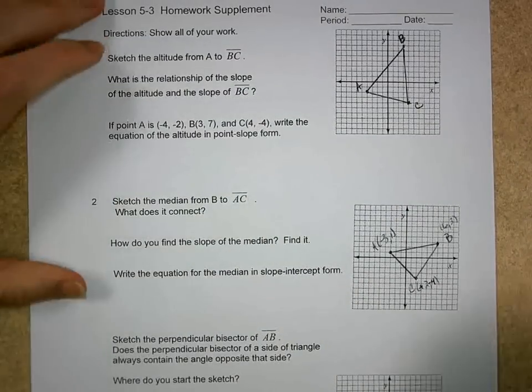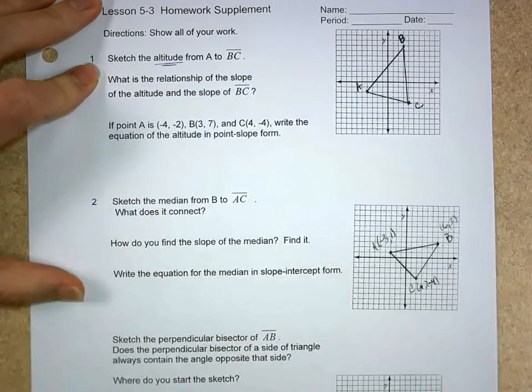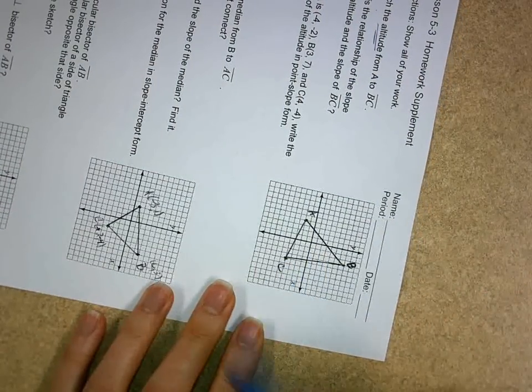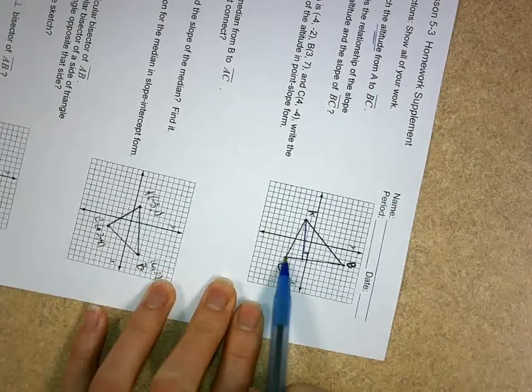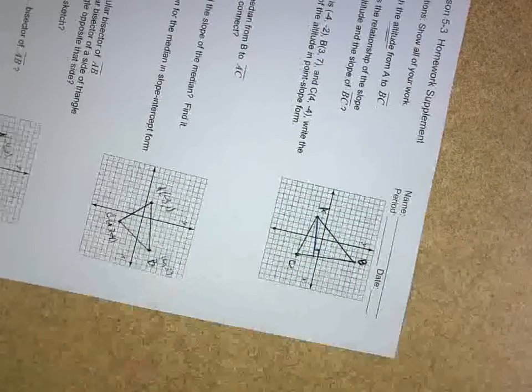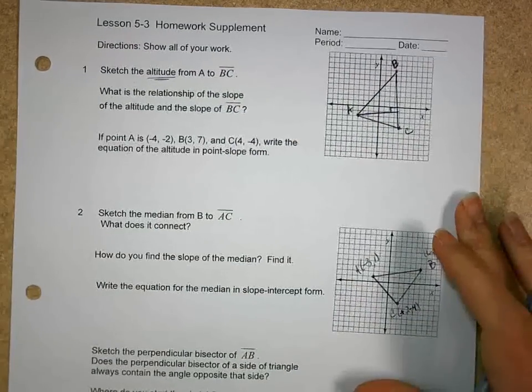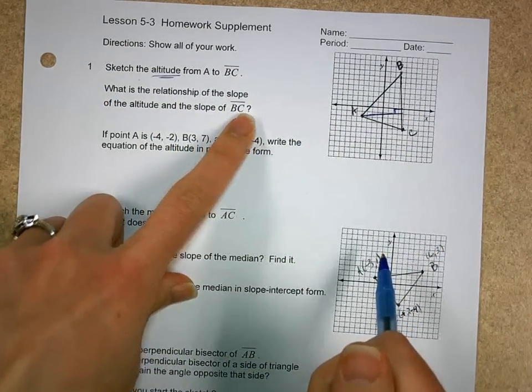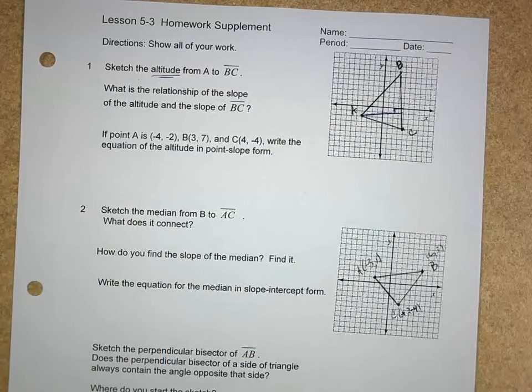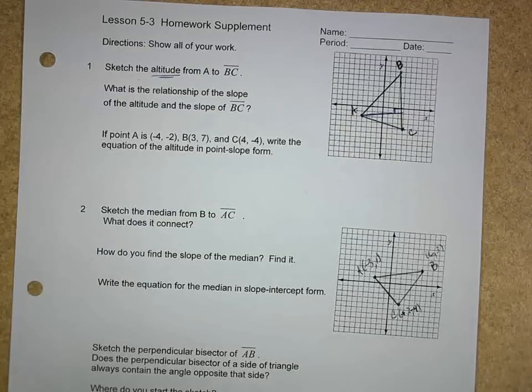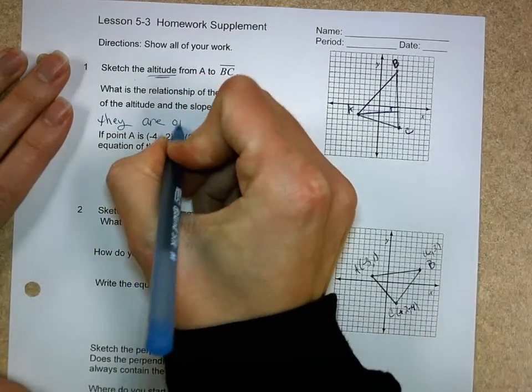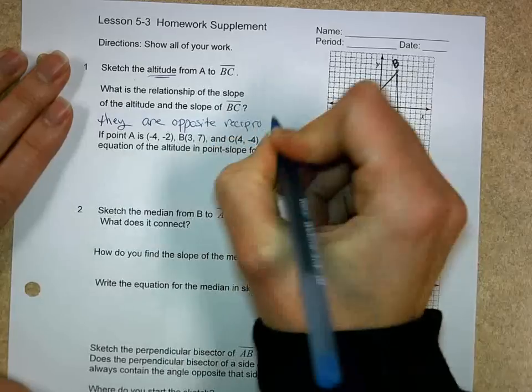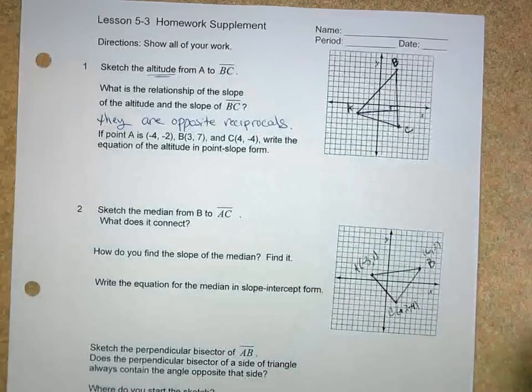First thing they say, sketch the altitude from A to segment BC. Remember when we were doing this in class, and I did this on the video, when you're doing an altitude from A, you put the sign that you want parallel to yourself, and then you draw your altitude straight down. And that will form a right angle, which means these two segments have to be perpendicular to each other. They ask the following from that diagram: What is the relationship of the slope of the altitude and the slope of segment BC? If they are perpendicular segments, they form right angles. What do we know about perpendicular line slopes? They are opposite reciprocals.